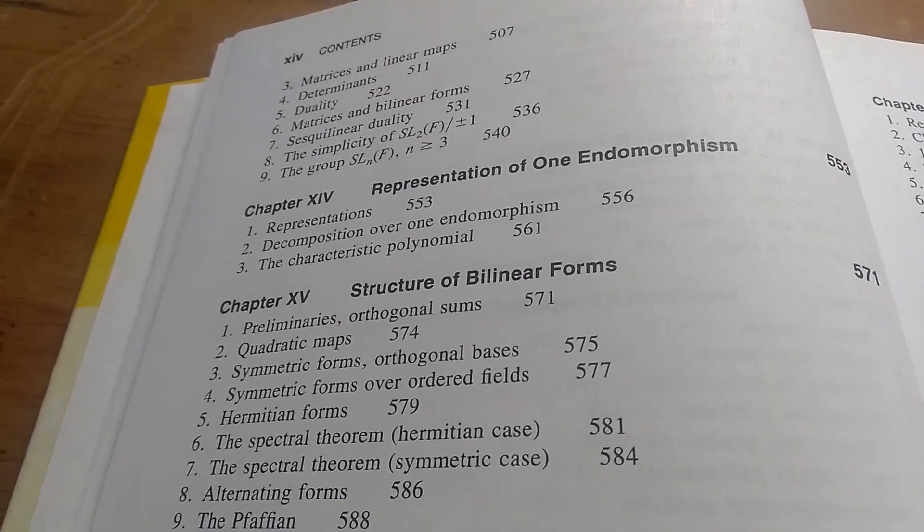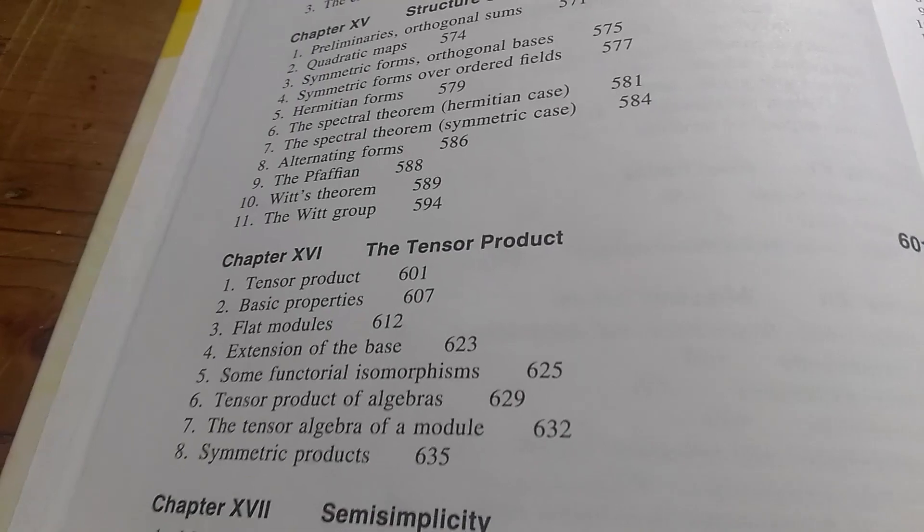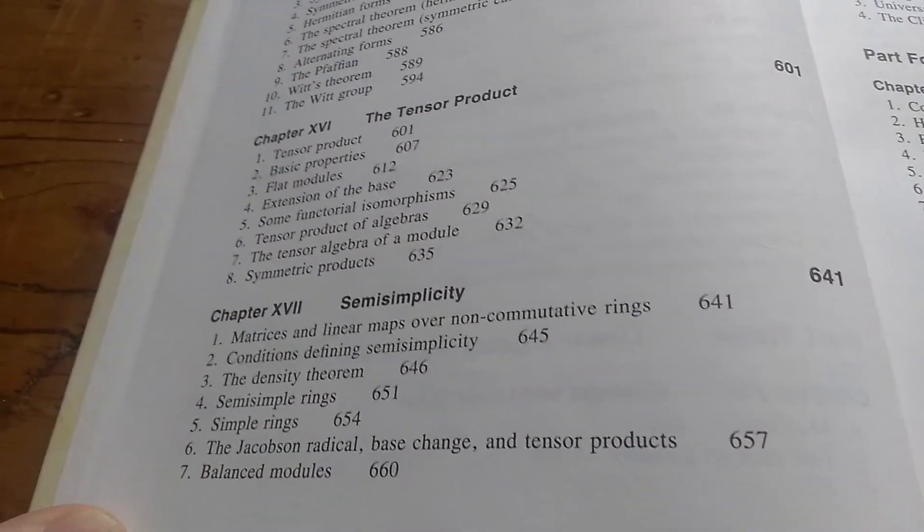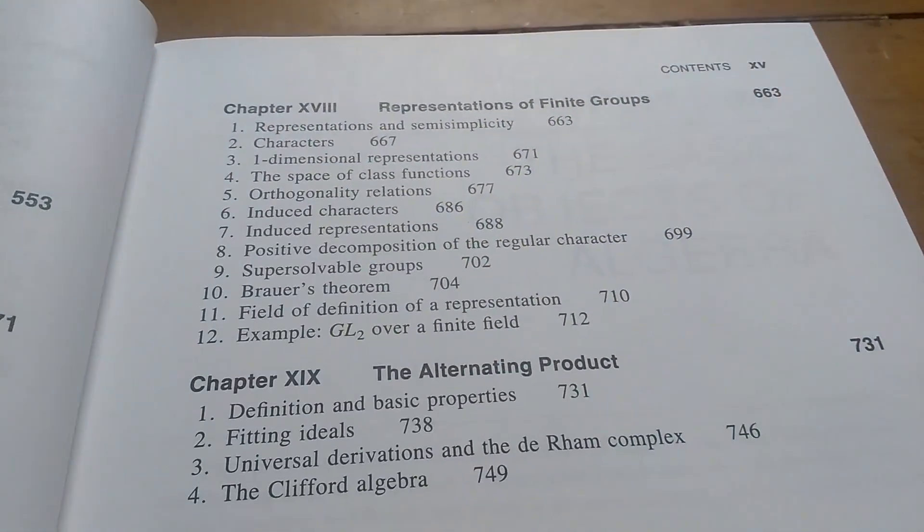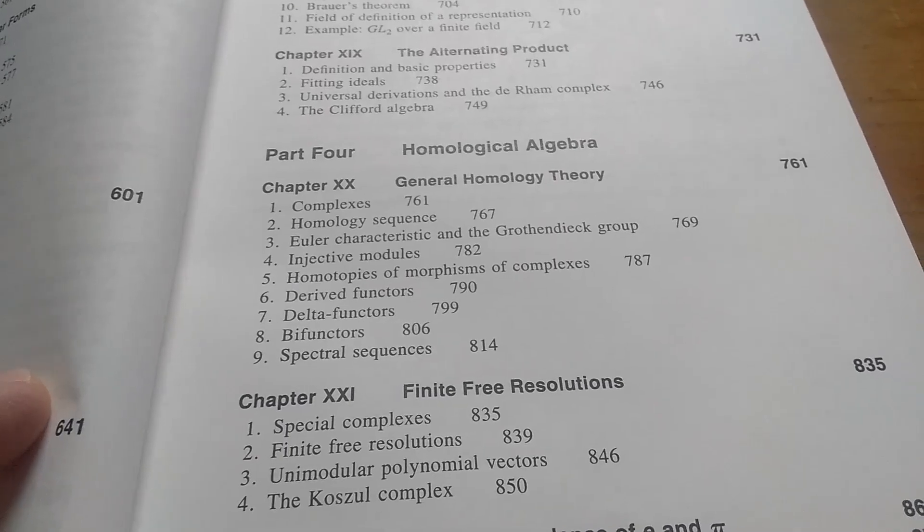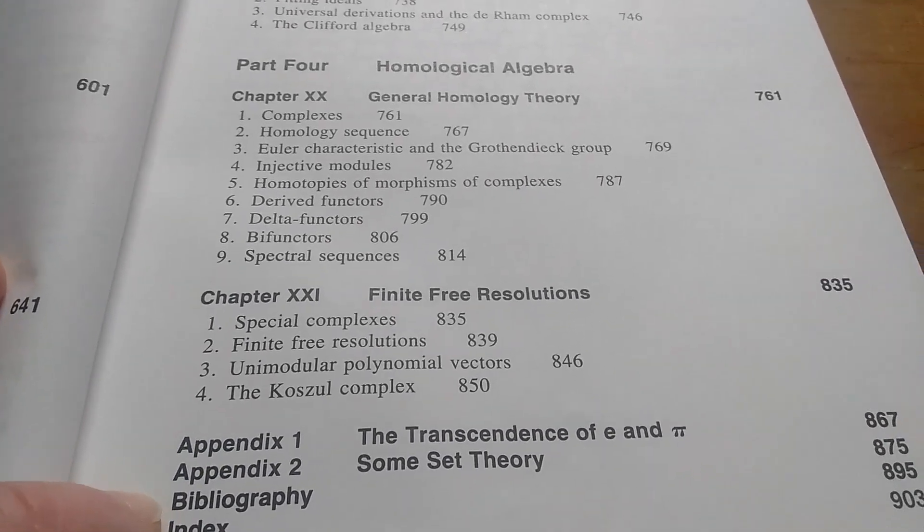Keeps going. Structure of bilinear forms, the tensor product, semi-simplicity, representations of finite groups, alternating products, homological algebra. Look at this. General homology theory, finite free resolutions.